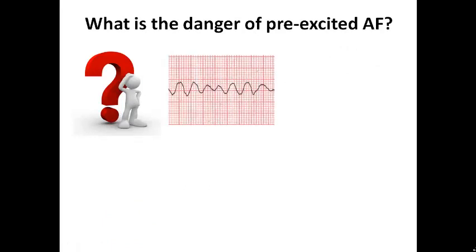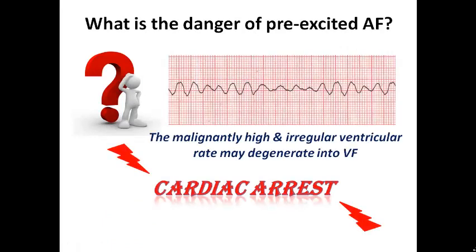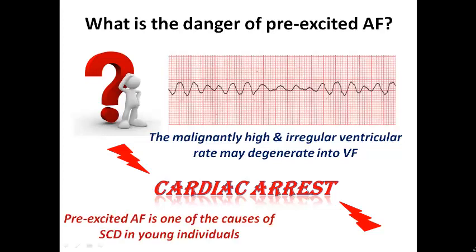What is the danger of pre-excited AF? Pre-excited AF is a very high-risk arrhythmia that can degenerate into VF. The extremely high ventricular rate with very short RR intervals can cause some complexes to fall in the vulnerable period, resulting in the R-on-T phenomenon, which can cause ventricular fibrillation and cardiac arrest. That is why pre-excited AF is one of the causes of sudden cardiac death in young populations. It is very important to recognize and intervene rapidly to terminate it, and then decide on long-term treatment — mostly accessory pathway ablation, which is a percutaneous procedure.